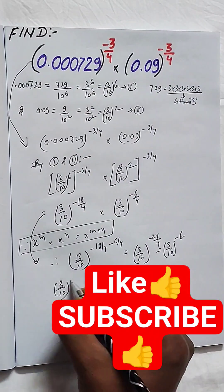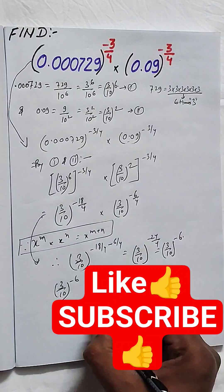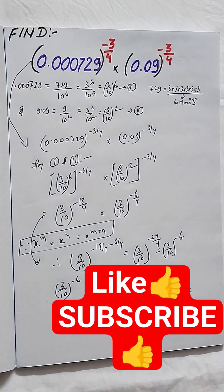So we know that when the bases are same, exponents will add. We use the same concept and we get the answer as (3/10)^(-6), which is our answer.